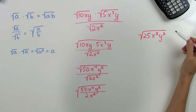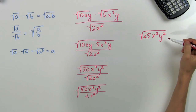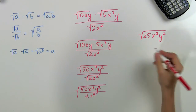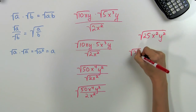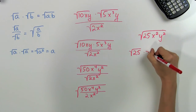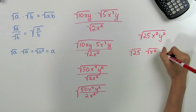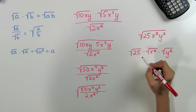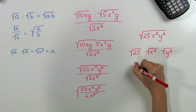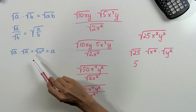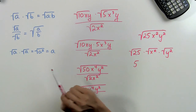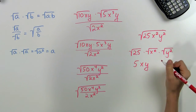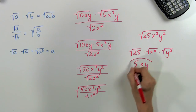Now we can go ahead and solve what's in the square root. To make this easier we can use our first rule the other way and expand it as the square root of 25 times the square root of x squared times the square root of y squared. We know that the square root of 25 is 5, and using the rule that the square root of a squared equals a, we simplify to get x and y. That gives us our answer: 5xy.